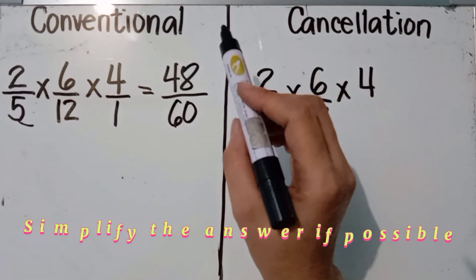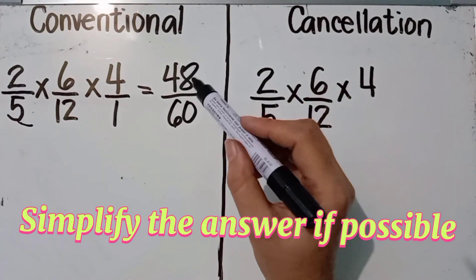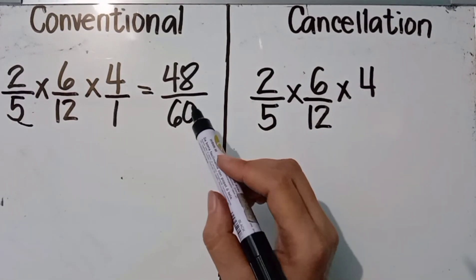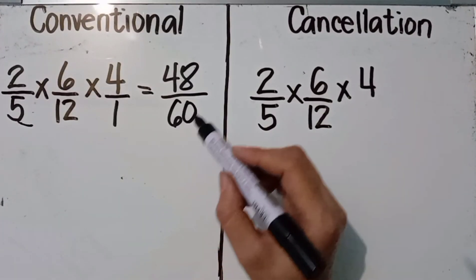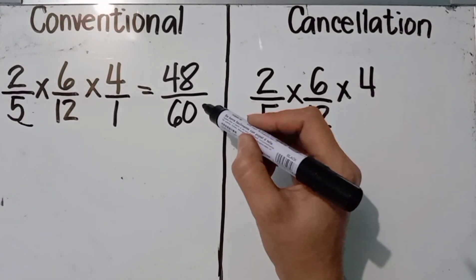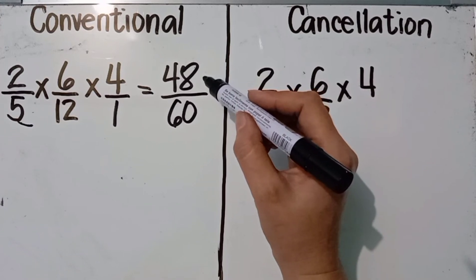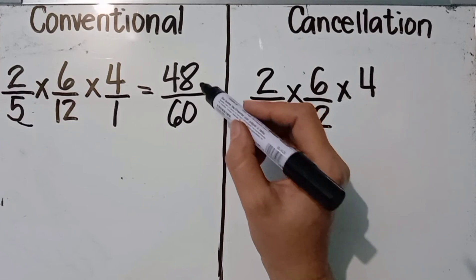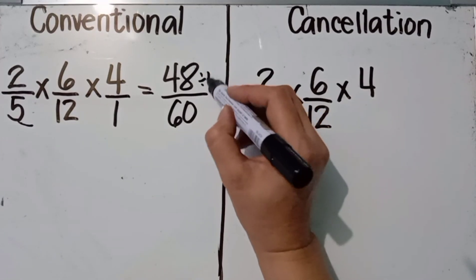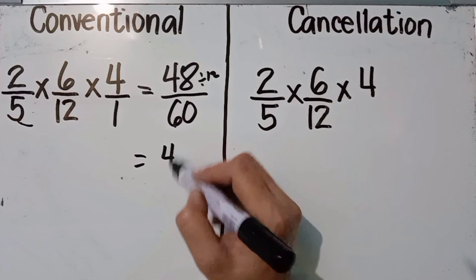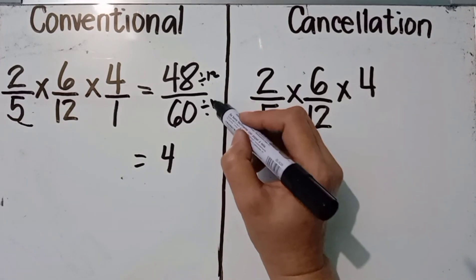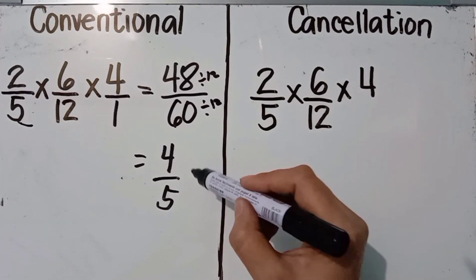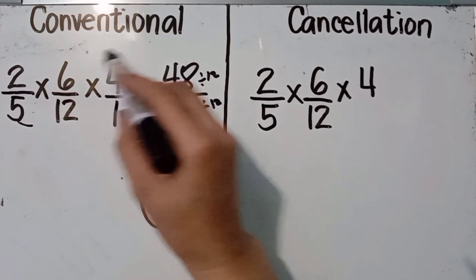The last step is to simplify the answer if possible. Forty-eight over sixty has a common factor — their GCF is 12. So 48 divided by 12 equals 4, and 60 divided by 12 equals 5. Our final answer is four over five using the conventional method.